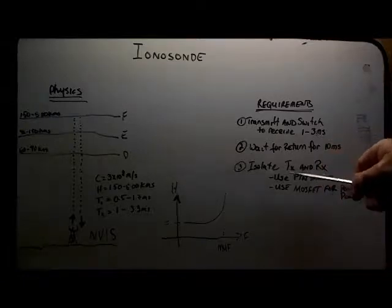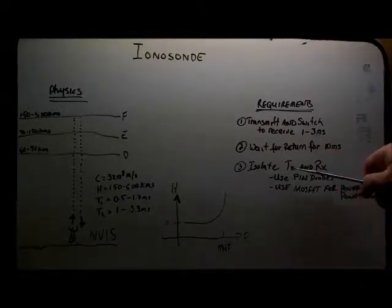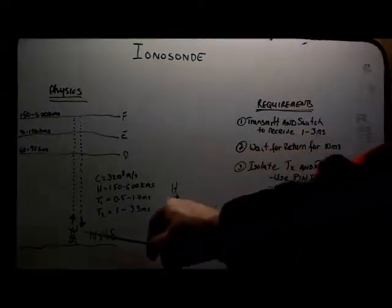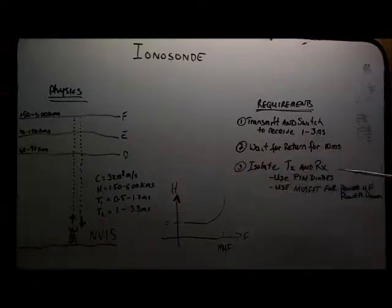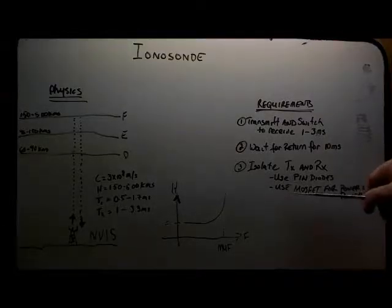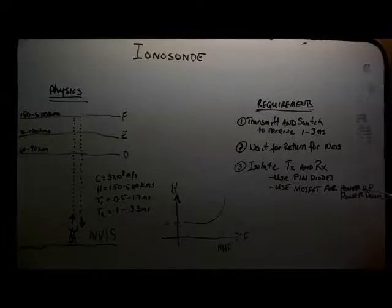I need to isolate the transmit and receive modules because I'm using the same antenna. So what I'm planning to use are pin diodes to separate and isolate receive and transmit, as well as use a MOSFET for powering up and powering down the amplifier.